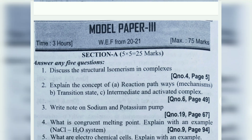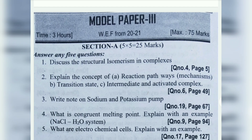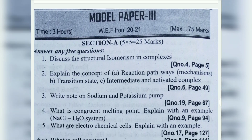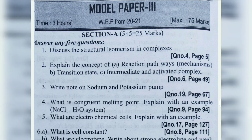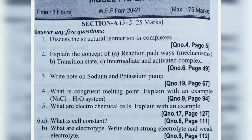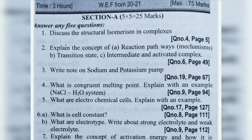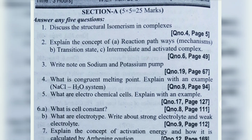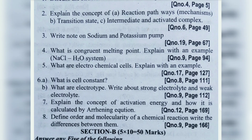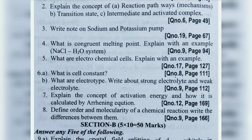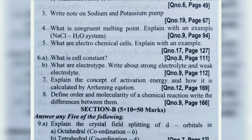Third one: Write a note on sodium and potassium pump. Fourth one: What is a congruent melting point? Explain with an example — NaCl-H₂O system. Fifth one: What are electrochemical cells and what is cell constant? Sixth (b): What are electrode types? Write about strong electrolyte and weak electrolyte.